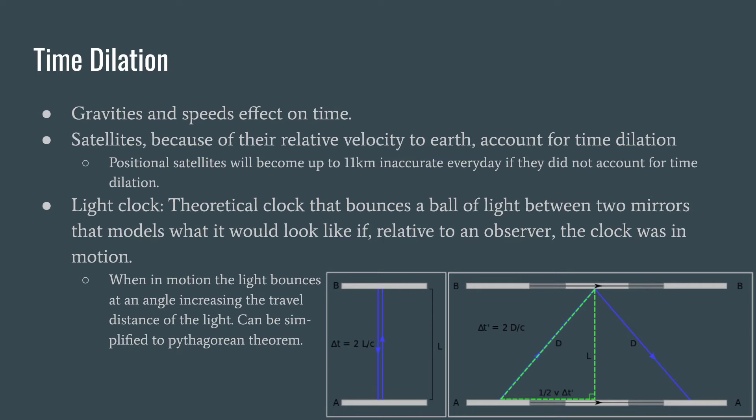Which is also increasing the distance that light has to go from one mirror to the other. Now, this is pretty simply explained with the Pythagorean theorem. A squared plus B squared equals C squared. So for however long it has to go in distance squared plus however far the distance between the two mirrors squared is equal to the distance that that light has traveled, which is farther than the normal second.